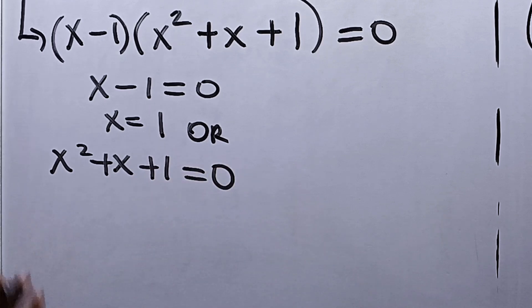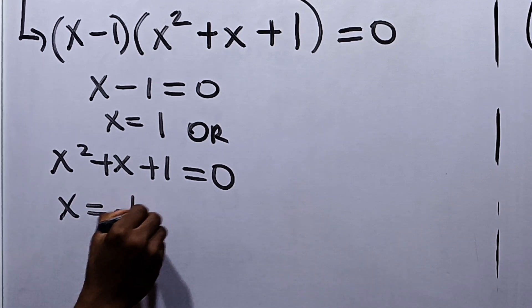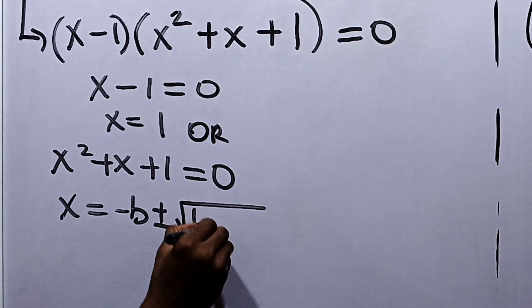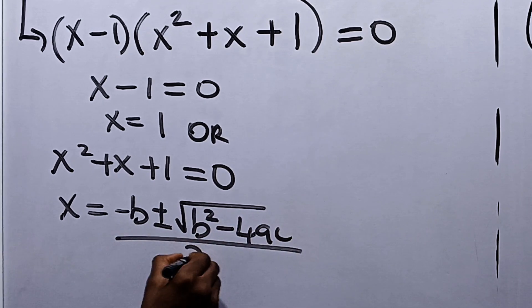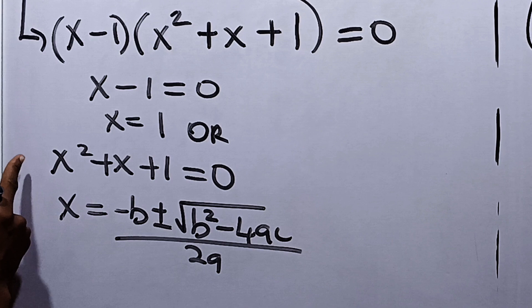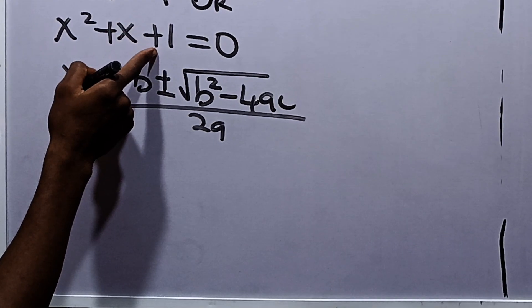This is a quadratic equation, but we cannot factorize this. So we'll substitute this into the quadratic formula. The quadratic formula states that x becomes equal to minus b plus or minus square root of b squared minus 4ac all over 2a. Now a is the coefficient of x squared, which is 1, b is the coefficient of x, which is 1, and c is also 1.